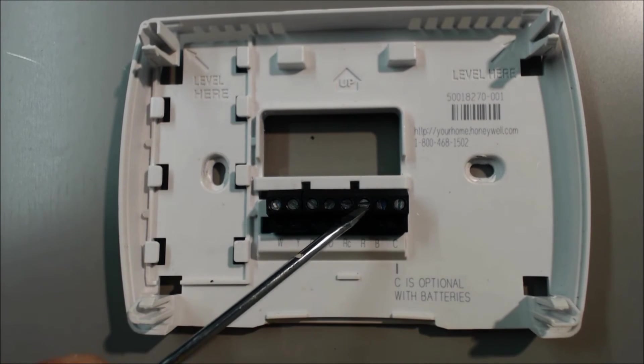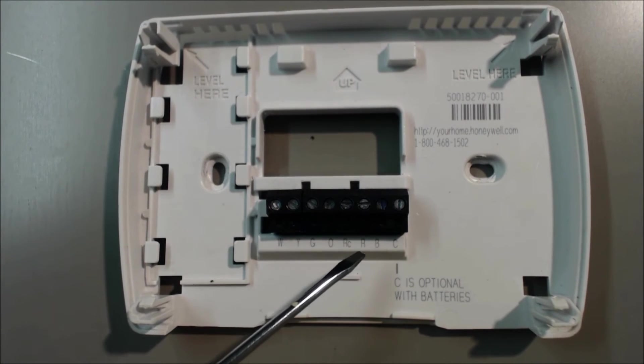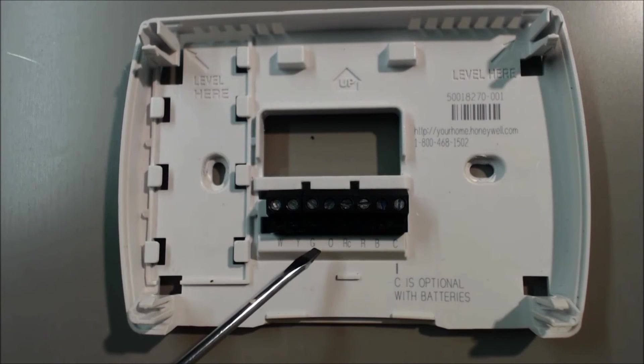So what will happen is the 24 to 28 volts will be coming in the RC, and it will get connected in the thermostat and come back out the G to the air handler control board. It'll tell it to turn the fan on.